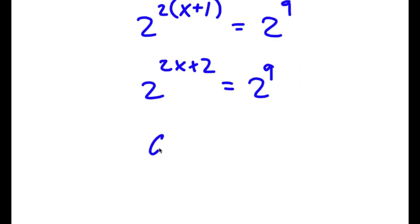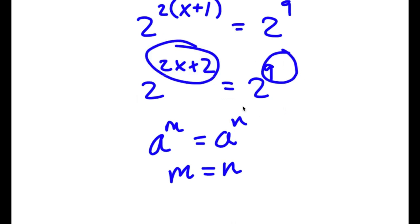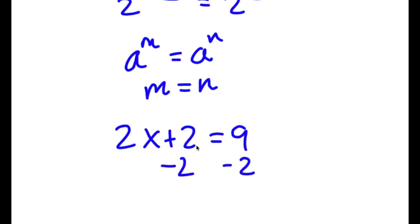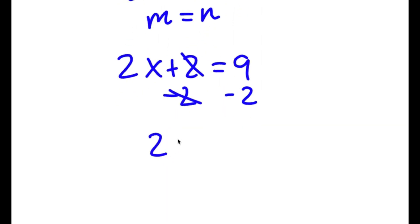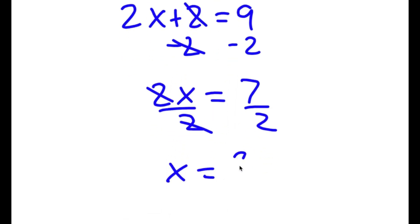If I have something in the form a to the power of m equals a to the power of n, this means m is equal to n. So in this case, m is 2x plus 2 and n is 9. So now I have 2x plus 2 is equal to 9. Subtracting 2 on both sides gives 2x equals 7, and dividing both sides by 2 gives x is equal to 7 over 2.